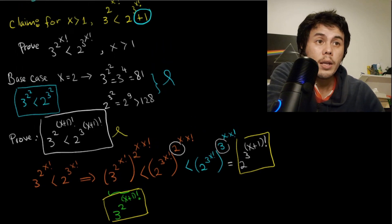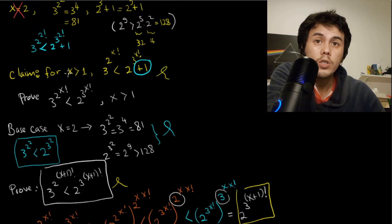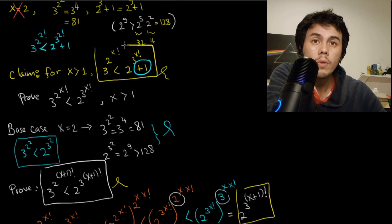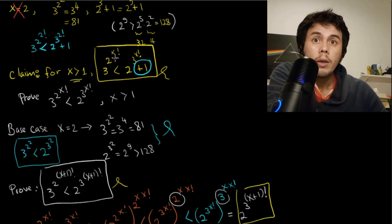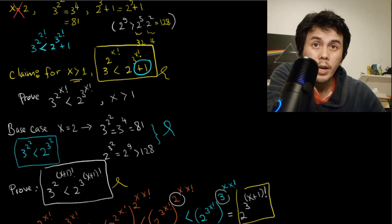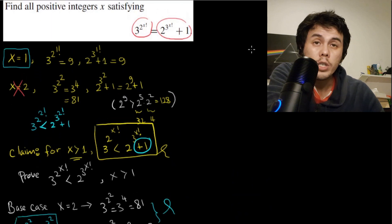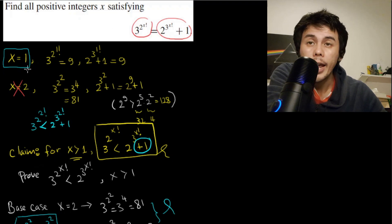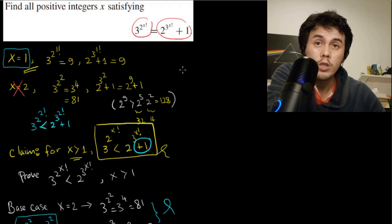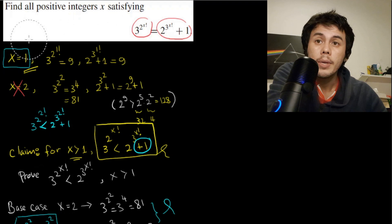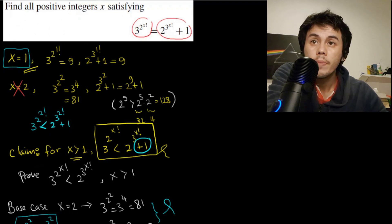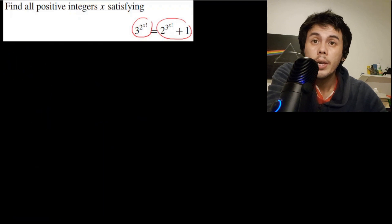By induction, we have proved that 3^(2^(x!)) < 2^(3^(x!)) for all x > 1. This means for x > 1, the left and right hand sides of the original equation are not equal, so there is no other positive integer solution. x = 1 is the only solution. This completes the first proof by induction.